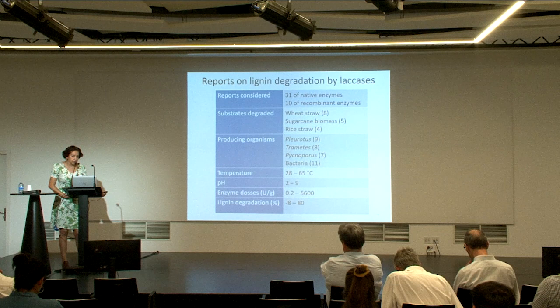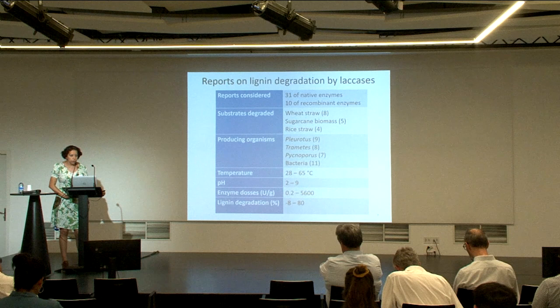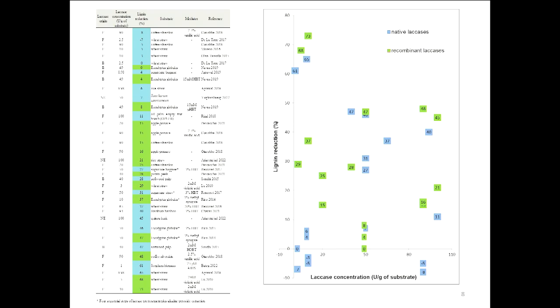We then selected some of these reports, reducing to the ones that use less than 100 units per gram of substrate, and we plotted them in a graph. On one axis we can see the laccase concentration, and on the other we can see the reduction in the amount of lignin achieved. We can conclude some things from this graph. We can see that the negative values were all obtained with native laccases — native laccases are the blue dots and recombinant are the green ones — so the negative values of lignin reduction were obtained when using native laccases.